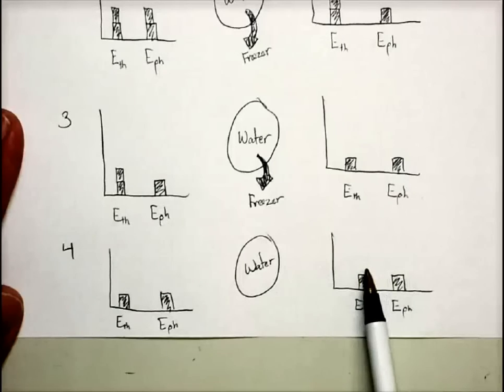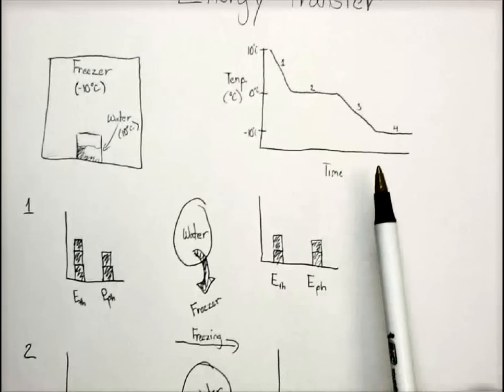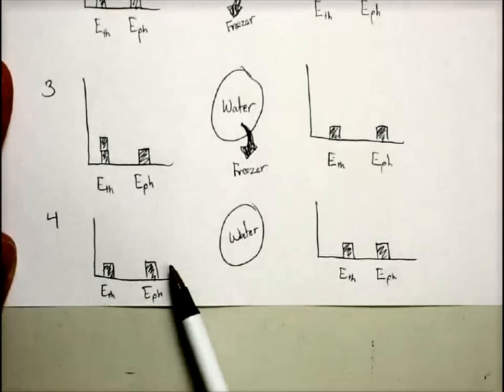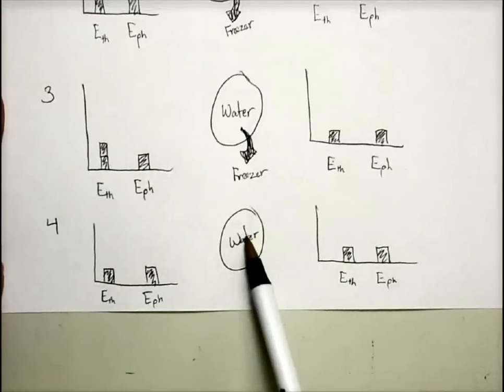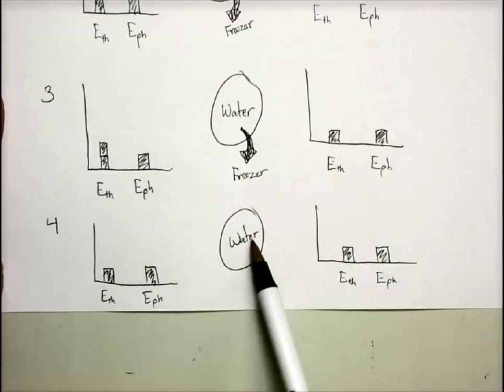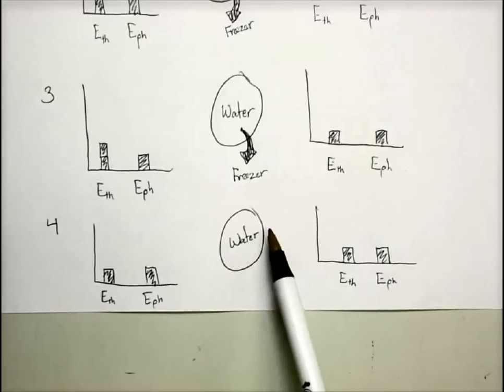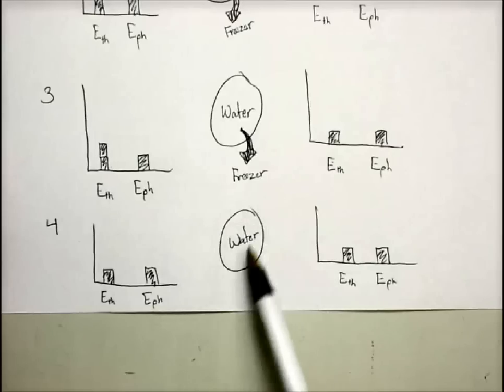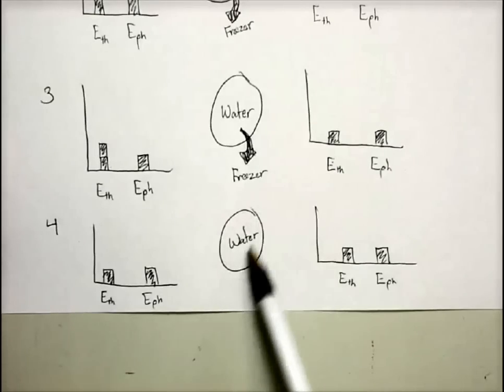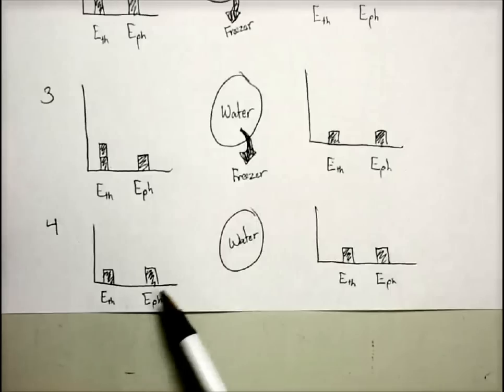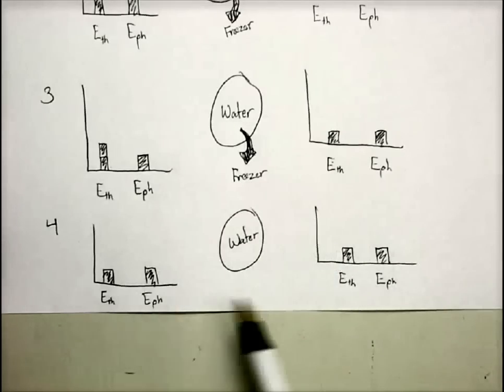We started with ice. And we end with ice. So our phase energy cannot change either. So this means that there's no energy going in or out of the water. The water has reached what's called equilibrium with the freezer. So there's no transfer of energy in or out. So we don't have to draw any arrows coming in or out of our system. We simply know that this is showing that the water is now staying at the exact same energy.